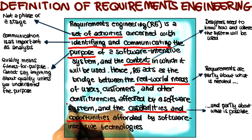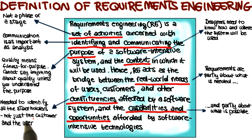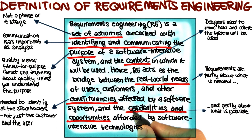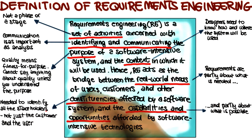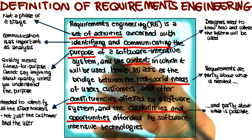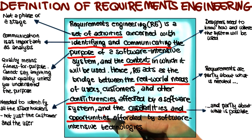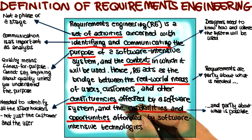Finally, I would like to point out the term constituencies, which indicates that we need to identify all of the stakeholders, not just the customer and the user — anybody who is affected by a software system. It is very important to consider all of these actors. Otherwise, we'll be missing requirements, missing part of the purpose of the system, and we will build a suboptimal system.